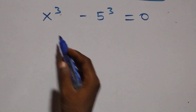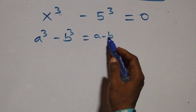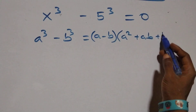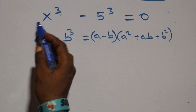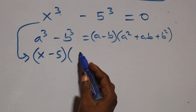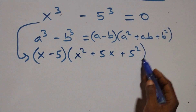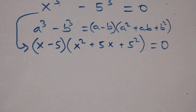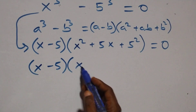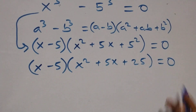Then solving from the second case, this also follows when we have a cubed minus b cubed equals a minus b, open bracket, a squared plus ab plus b squared. At this, this becomes x minus 5, open bracket, x squared plus 5x plus 5 squared, close bracket, equals 0. This is the same as x minus 5, open bracket, x squared plus 5x plus 25, close bracket, equals 0.